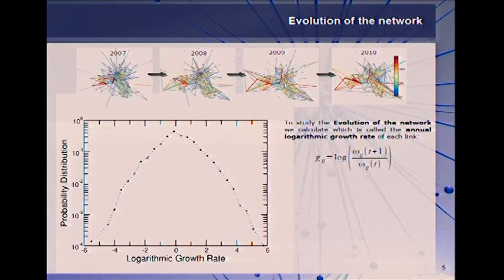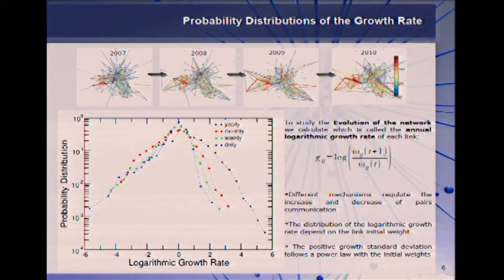The left part represents the distribution of those pairs that decrease the communication and the right part represents the distribution of those pairs that increase communication. So we see that the curve is pretty symmetrical but when we divide the data by the initial weight - given that each pair of communication has on average a yearly, monthly, weekly, or daily communication - they have different distributions and when we plot these distributions we observe that they are not symmetrical anymore.